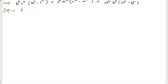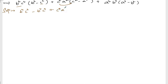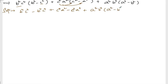So b squared c squared into b squared gives b to the power 4 c squared, minus b squared c squared into c squared gives b squared c to the power 4. Then c squared a squared into c squared gives c to the power 4 a squared, minus c squared a squared into a squared gives minus c squared a to the power 4. Plus a squared b squared into a squared minus b squared.